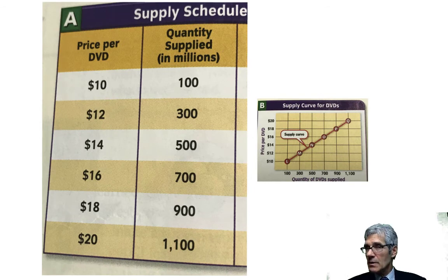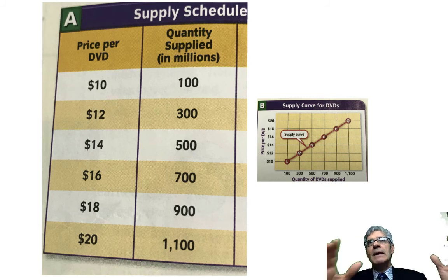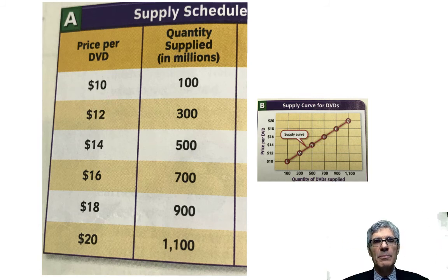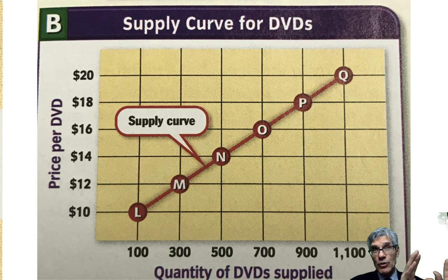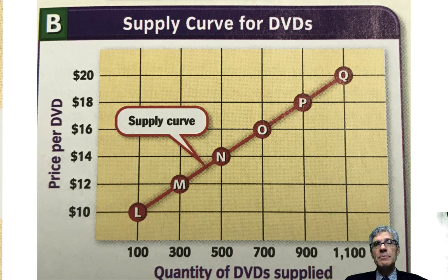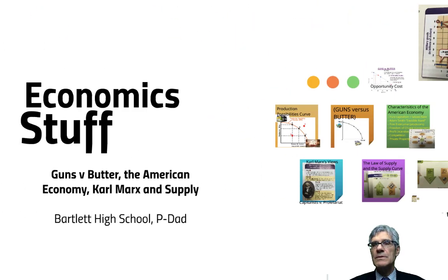Looking at the chart from your book: DVDs. At $18, 900 million DVDs are being made because producers go into DVD-making when people pay that price. But now if I can only get $10 for a DVD, only 100 million are supplied — the lower the price, the fewer produced. This chart puts that into graphic form: as more DVDs are supplied and price goes up, producers produce more because that's where the money is. As demand dies down and price falls, production goes down. Some of these ideas are going to be on your test tomorrow.